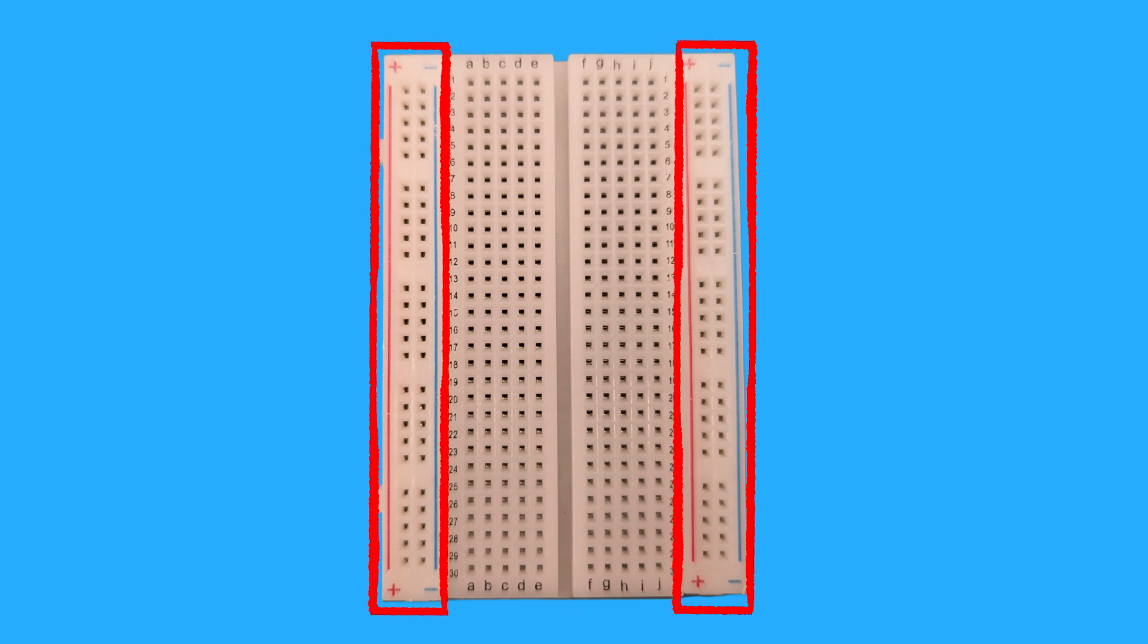Next, let's talk about the long strips that run along the top and bottom of your breadboard. These are called power rails or power buses. They're usually marked with red and blue lines along with plus and minus signs. These strips are used to distribute power to your circuit.